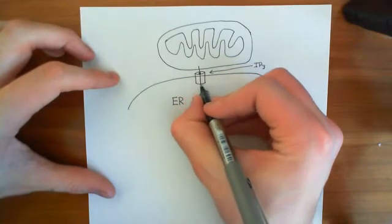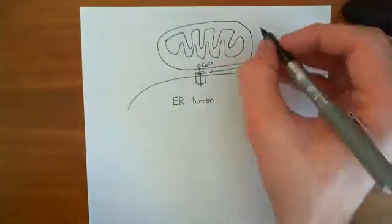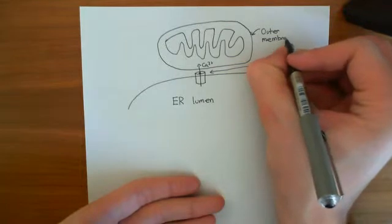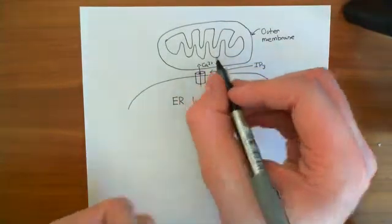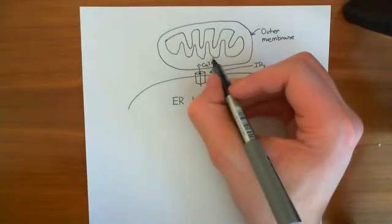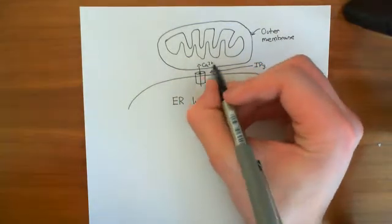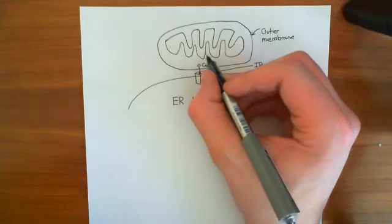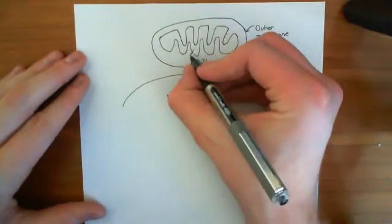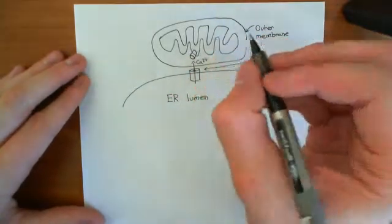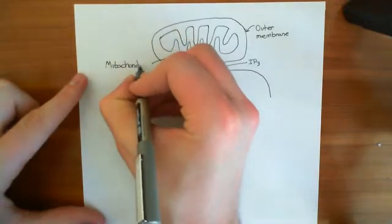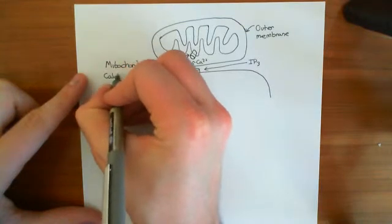The IP3 receptors release calcium from the endoplasmic reticulum. Now, the outer mitochondrial membrane is freely permeable to calcium, so calcium can go through the outer membrane into the intermembrane space. What will then happen is it will get to the inner mitochondrial membrane. The inner mitochondrial membrane is extremely tight, so this calcium puff released from our IP3 receptors is not going to get past the tight inner mitochondrial membrane unless there is some channel in the membrane. And indeed there is — a channel in this inner mitochondrial membrane known as the mitochondrial calcium uniporter, or MCU.